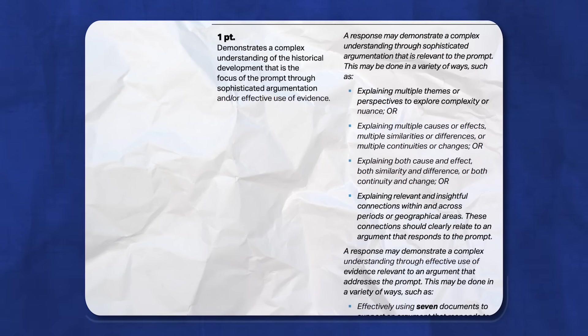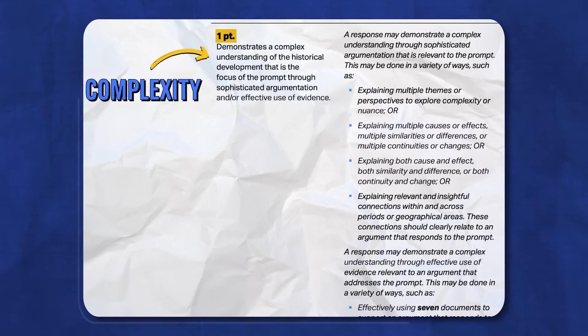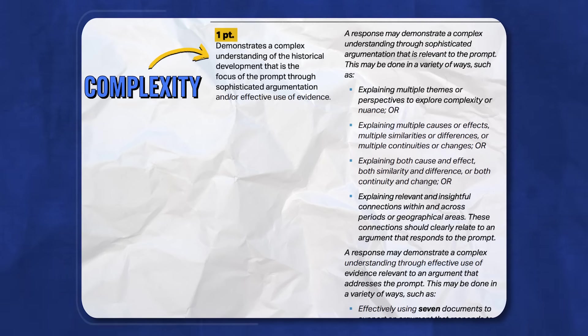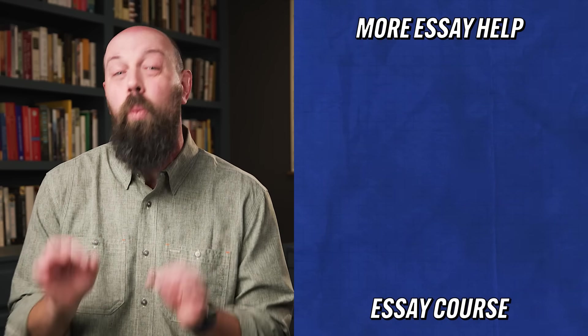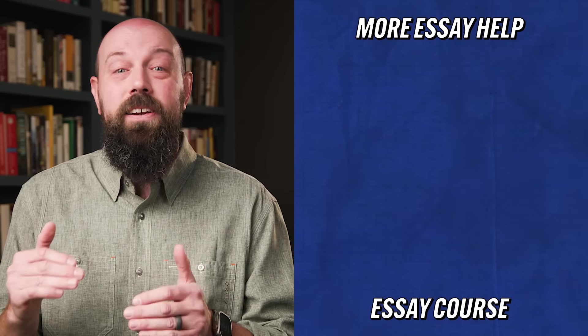The final part of this section is for complexity, and you can earn one point for this skill. The rubric gives you several ways to earn it, but the two most straightforward are: first, successfully use all seven documents to support your thesis — if you do for all seven documents what you did for those four in the evidence section, that's the complexity point. Second, successfully source four documents instead of two — the skill is the same, you just do it two more times. The complexity point can also be awarded for just part of the essay, so you can demonstrate that skill in a single well-crafted paragraph.